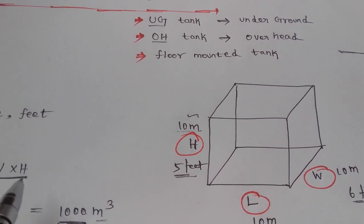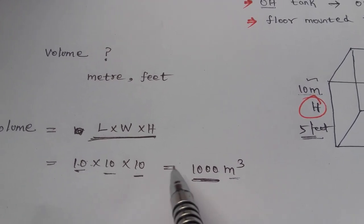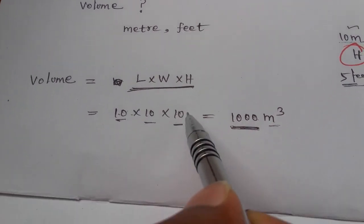Let's talk about volume. Volume is length, width, height. So, 10m, 10m, 10m equals 1000 meter cube.